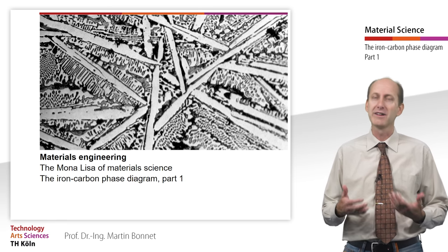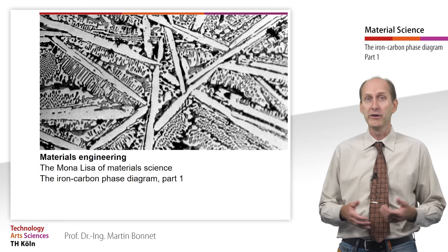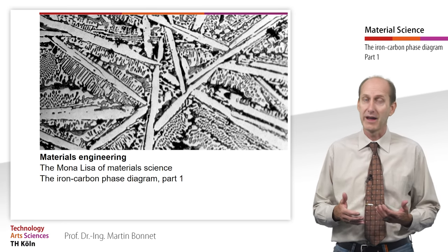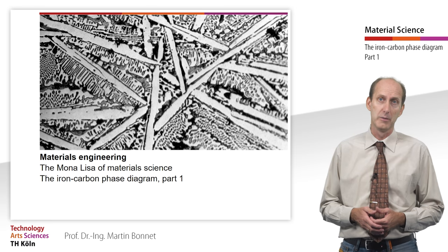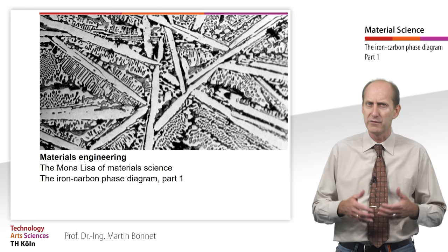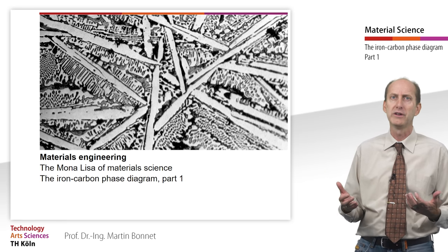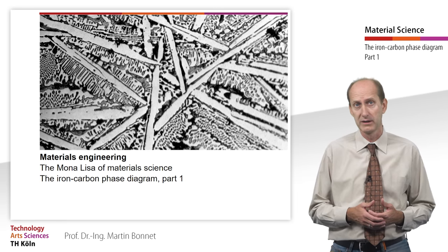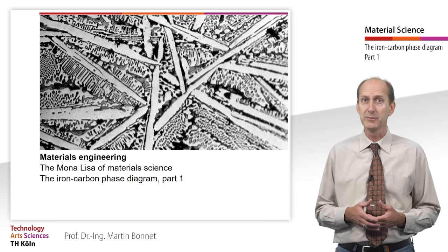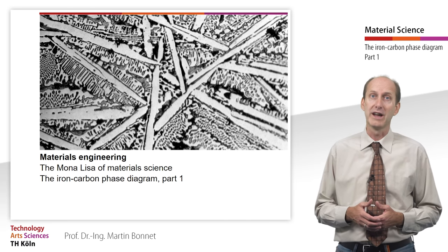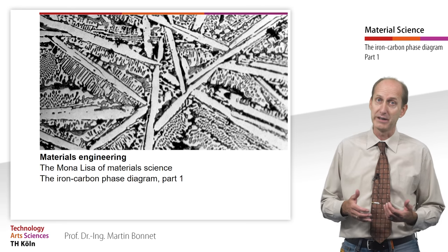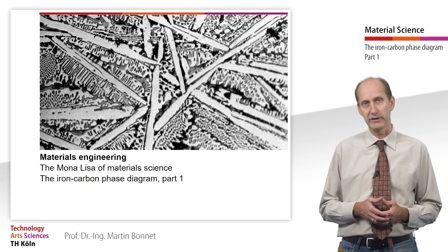Meet the iron-carbon phase diagram. The iron-carbon binary system forms the basis for all steels and cast iron materials. The mechanical properties of steel and cast iron materials can be changed in vast ranges of different degrees of strength. This is closely related to the transformation behavior of the iron lattice and the specific interactions between carbon and the two crystal structures of iron, namely body-centered cubic and face-centered cubic.